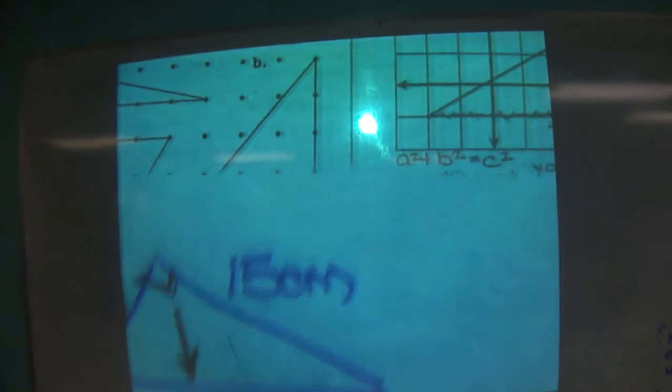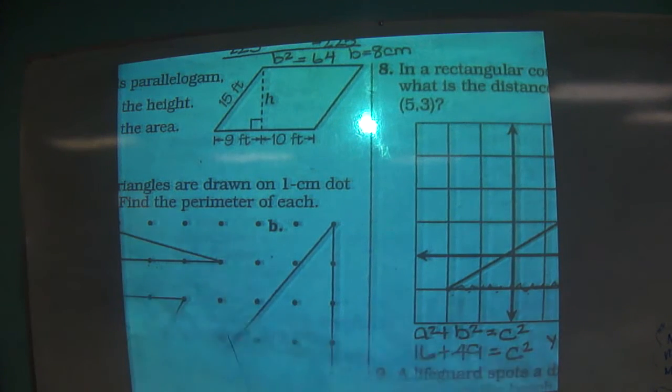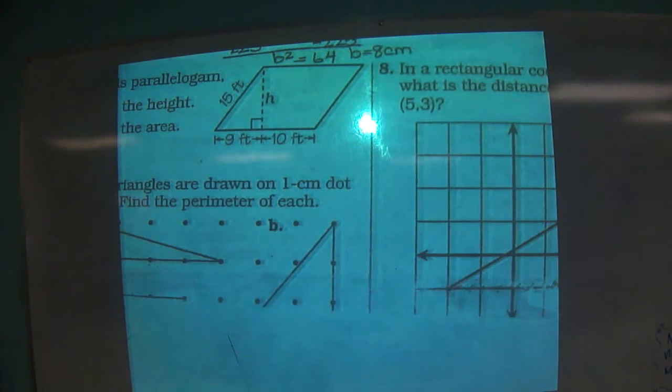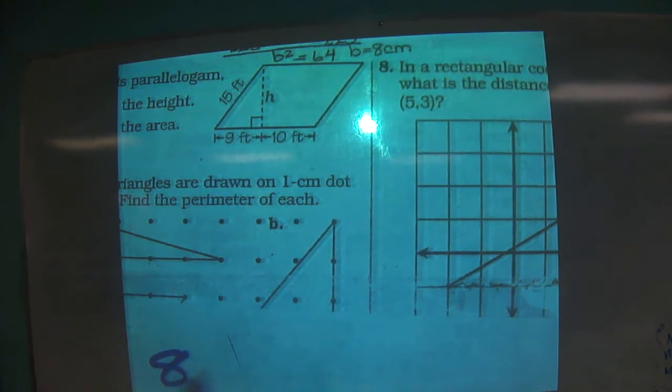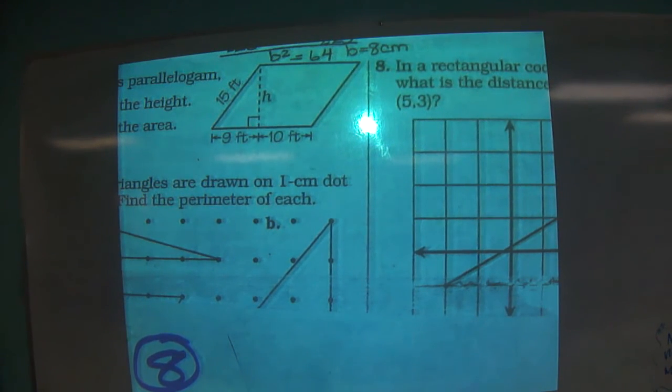Here, look at number 8. In number 8, it's a little different because they didn't really give you anything but a picture of a coordinate graph. So they said, oh, well, here it is.